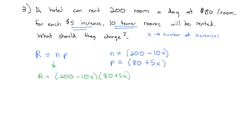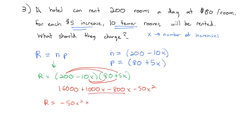To maximize the revenue, we know we take the derivative and set it equal to zero. We could use the product rule here, but this will probably be easier if I first FOIL this all out. So let's do that. 200 times 80 is 16,000. 200 times 5x is plus 1,000x. Negative 10 times 80 is negative 800x. And negative 10 times 5 is negative 50x squared. So putting that together, revenue is equal to negative 50x squared plus 200x plus 16,000.